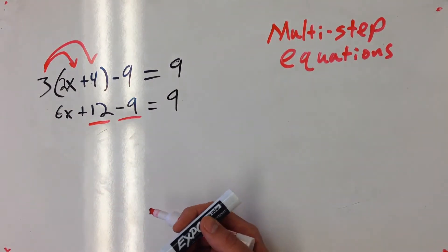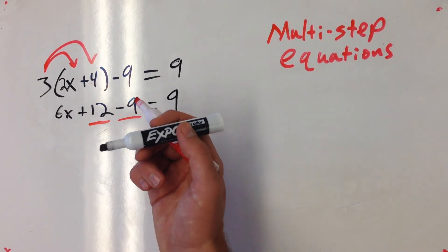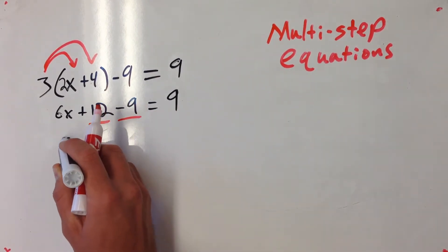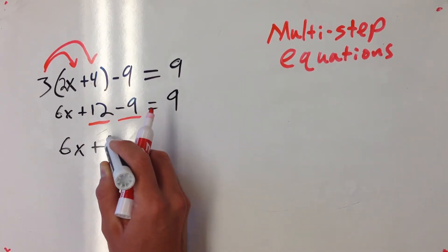Both of these don't have an x, I can't combine them with 6x but I sure can combine them with each other. So 6x, 12 minus 9 is 3.